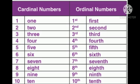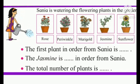And this is how Ordinal Numbers are written: 1st, 2nd, 3rd, 4th, 5th, 6th, 7th, 8th, 9th, 10th.